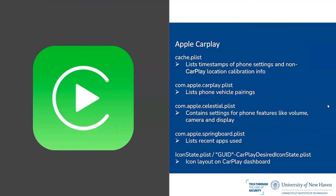For Apple CarPlay, since it is not an application, much of the information found was scattered across the file system in files that also contain other phone settings. The cache PLIST file lists timestamps of phone settings and some non-CarPlay location calibration information. The com.apple.carplay file lists vehicle pairings. The com.apple.celestial file contains settings for phone features like volume, camera, and display. The com.apple.springboard PLIST lists recently used applications. The icon state and GUID CarPlay desired icon state PLIST files provide information about the icon layout for the CarPlay dashboard — with a unique GUID per vehicle connected.